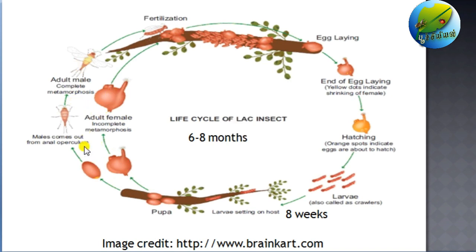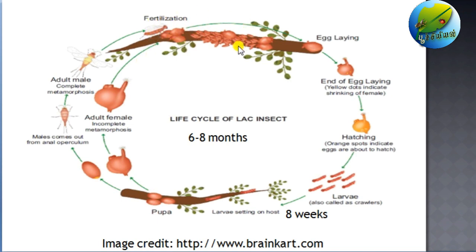After hatching from the pupal stage, males walk over the cells on the twigs to find the female cells, which are visible with the anal tubercles. The male fertilizes the female through the anal tubercle. As soon as fertilization is over, the female cells start to produce a lot of encrustation — that is, lac. Production increases greatly as soon as fertilization takes place. The male dies after two to three days of mating and does not have much commercial importance. The major producer of lac is the female caste.